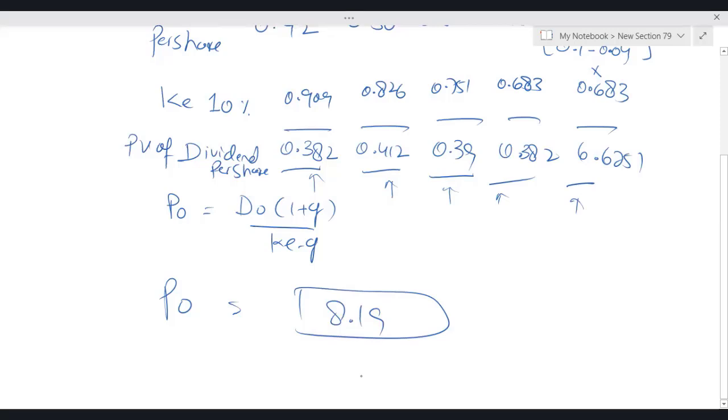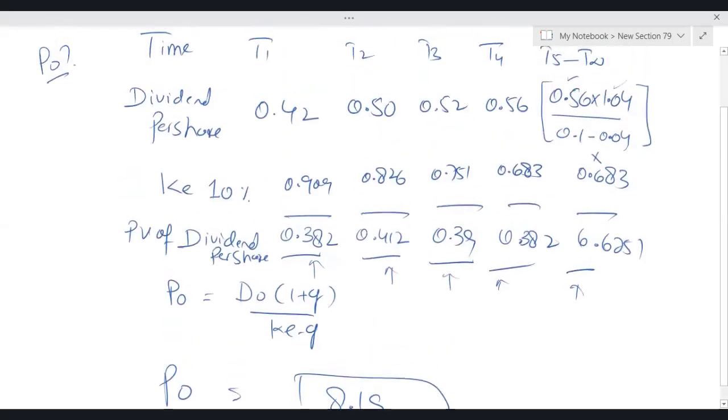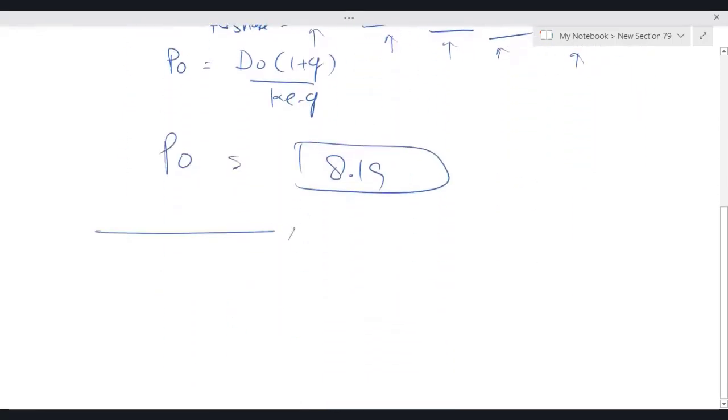So simply, this is how you calculate P0 using dividend valuation model if information is given in this format. Otherwise, if examiner instead of this gives you information like this: